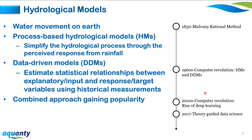The computer revolution in the 1960s allowed hydrologists to devise process-based hydrological models and data-driven models, both of which may require high computational cost or large volumes of data. Process-based hydrological models attempt to simplify the hydrological process through the perceived response of the catchment to rainfall. Data-driven models estimate statistical relationships between explanatory and response variables using historical measurements. HydroGeoSphere is an example of a process-based model; machine learning models fall under data-driven models.